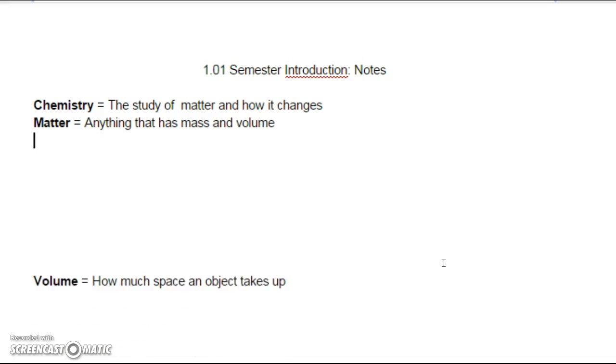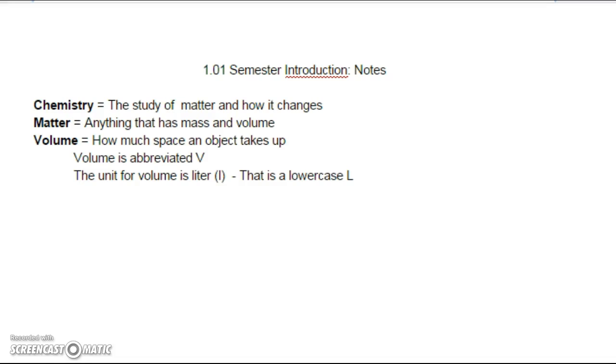So next, if we look at our definition, we notice we have the word matter. Well, anytime you have a definition, you better know exactly what every single word in the definition means. So we better be sure we all have the same definition, and we are going to add the word matter. Matter is anything that has mass and volume. So hit pause for as long as you need to write that down. Now we have two words in there that we need to define, volume and mass. So I wrote down volume first. Volume is how much space an object takes up. Volume is abbreviated V. And the unit for volume is liters, which is abbreviated L. And that's a lowercase L.